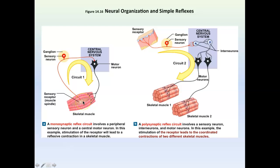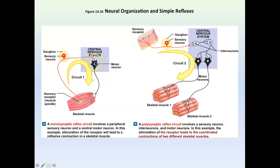The sensory receptor senses something — in this case, it's a stretch. If you stretch your muscles too much, there's a reflex to not allow them to stretch, to kind of contract them when they're being stretched. So what happens is this stretch will send a message into the spinal cord — the central nervous system here is the spinal cord — then synapse directly with the motor neuron. The motor neuron will then respond by causing the muscle to contract. So stretch, muscle contracts. There's nothing interrupting this — this is a very fast, immediate reflex.